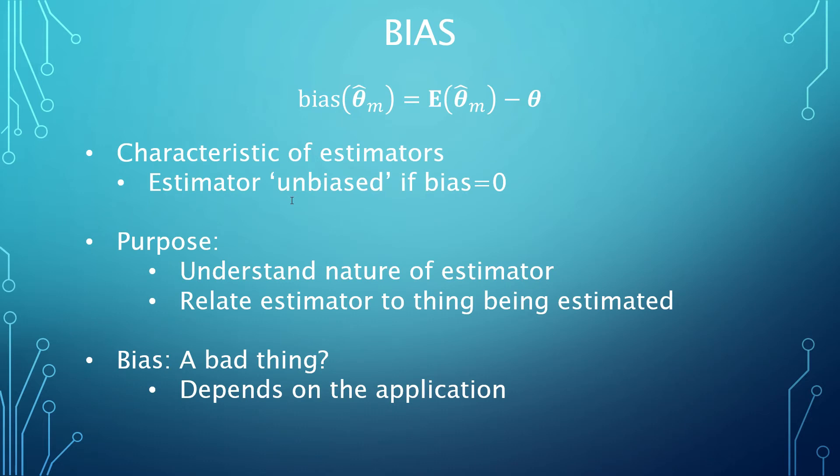The bias of an estimator is basically the average difference between the estimate and the true value. If there is no difference, then the estimator is unbiased. This principle can be applied to anything, with common applications being the estimation bias of the mean and the variance of probability distributions. While an unbiased estimator might be more desirable, there are some cases where a biased estimator isn't a bad thing.